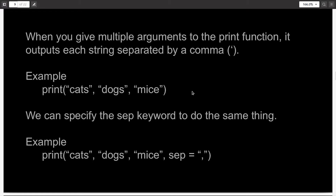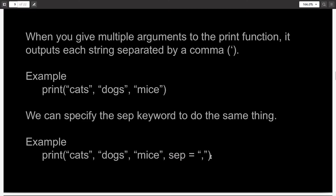Also, when you give multiple arguments to the print command, it will print all of them with a space in between. But if you want to change that separator to something else, you can specify the sep keyword. Set sep equal to whatever you want the separator to be in quotes. So here, cats, dogs, and mice will be separated by a comma and not a space.